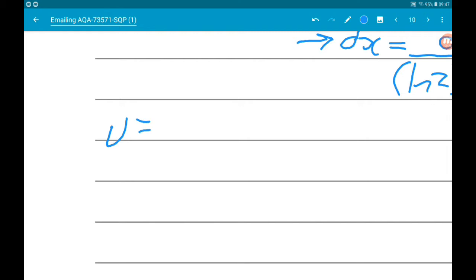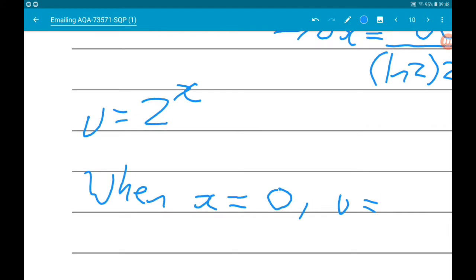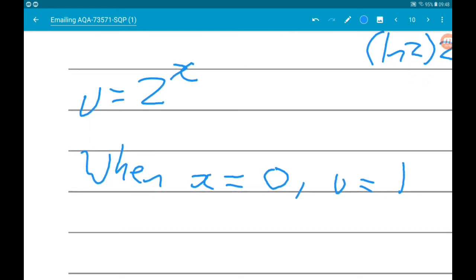When x is 0, u is equal to 2 to the power of 0, which is 1. And when x is 1, u is equal to 2.